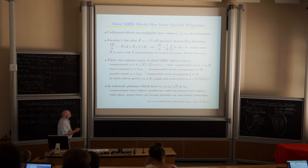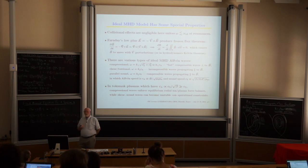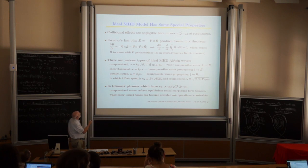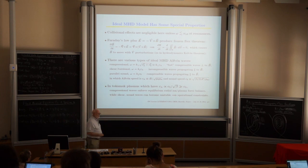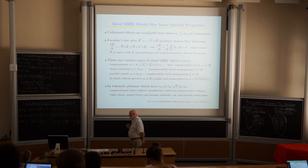Using Faraday's law, dB/dt = curl(E), and since E = -V cross B, we get dB/dt = curl(V cross B). This is the vector representation of flow in a magnetic field — it's the vector equivalent of V·∇V in fluid dynamics, but with a magnetic field.